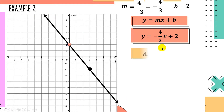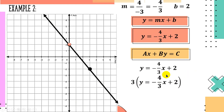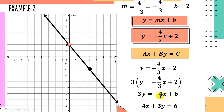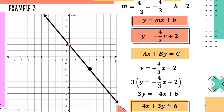If we need to rewrite it in standard form, since we have a denominator, we first multiply the whole equation by the LCD, which is 3. So 3 times y gives 3y; 3 times negative 4 over 3x gives negative 4x (the 3s cancel); and 3 times 2 gives positive 6. Then adding the additive inverse of negative 4x — which is positive 4x — to both sides, the right side becomes 0 leaving positive 6, and the left side becomes 4x plus 3y. So the standard form is 4x plus 3y equals 6, equivalent to y equals negative 4 over 3x plus 2.